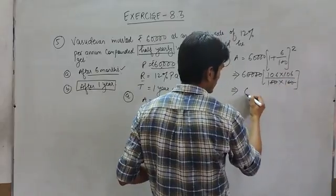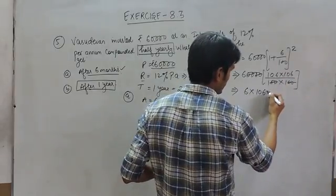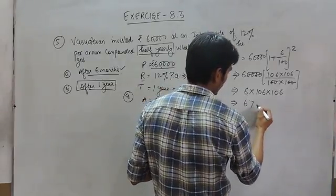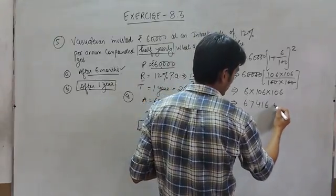So solving this, 6 multiplied by 106 multiplied by 106 is equal to 67,416 rupees.